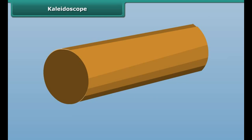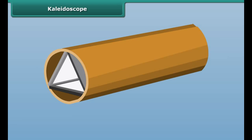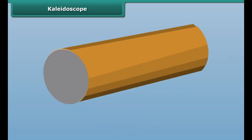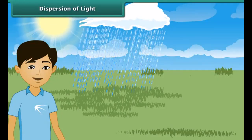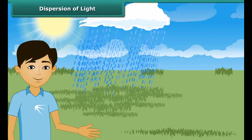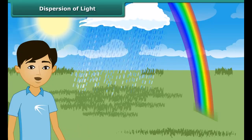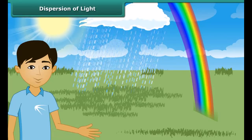Get three strips of plane mirrors and join them together to form a prism. Fix them in a circular cardboard tube. A cardboard disc should close one end of the tube. Pierce a hole in the center of this cardboard through which we can see. Paste a piece of transparent plastic sheet under the cardboard disc. At the other end, touching the mirrors, fix a circular plain glass plate. Place on this glass plate several small pieces of colored glass and close this end of the tube with a ground glass plate. Now look through the peephole in a well-lit area and rotate the Kaleidoscope to view a variety of beautiful colorful patterns in the tube.